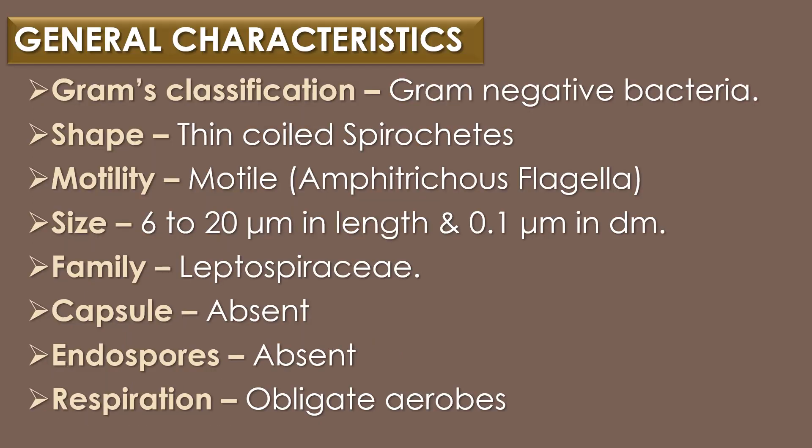General characteristics of Leptospira introgons: The bacterium Leptospira introgons is a gram-negative thin-coil spirochete and it is motile in nature due to the presence of amphitrichous flagella. Its size ranges from 6 to 20 micrometres in length and 0.1 micrometre in diameter. It belongs to the family Leptospiraceae. Capsules are absent, endospores are absent, and the mode of respiration is obligate aerobe.